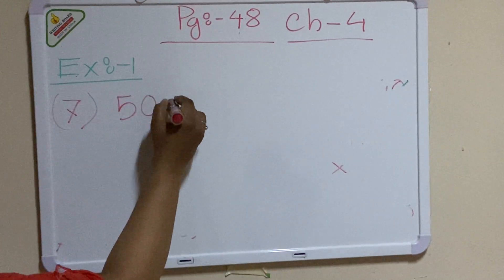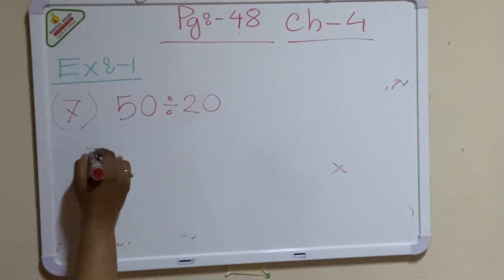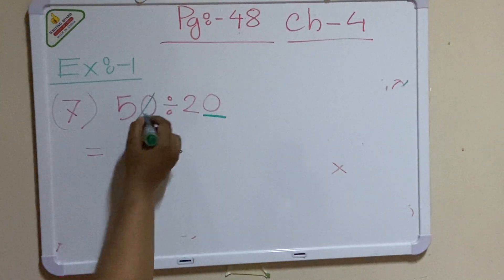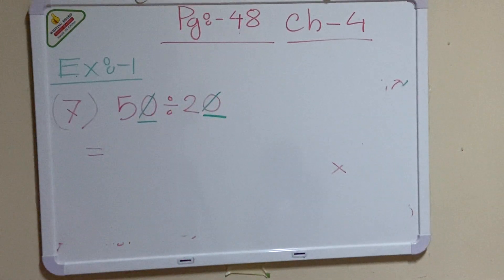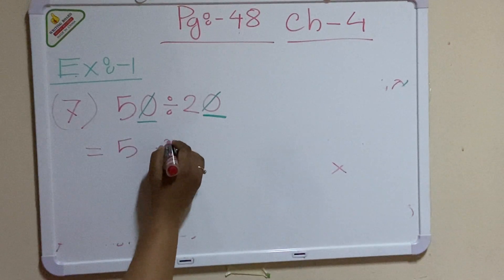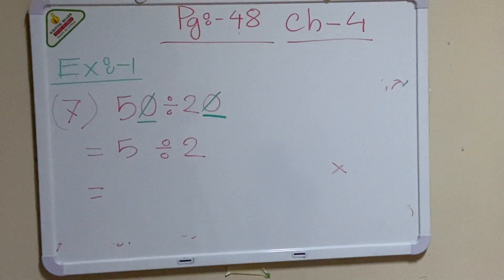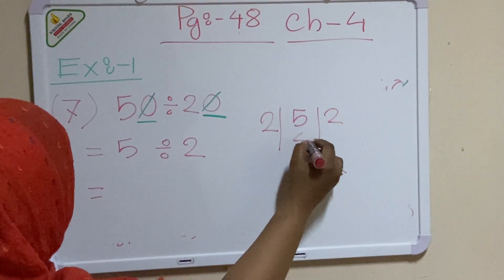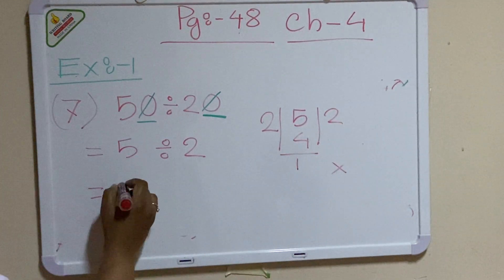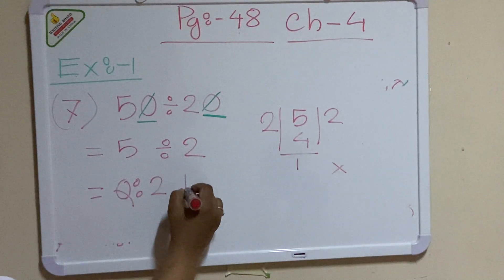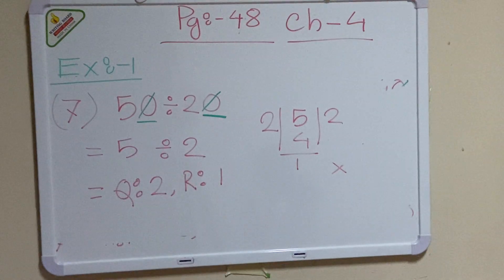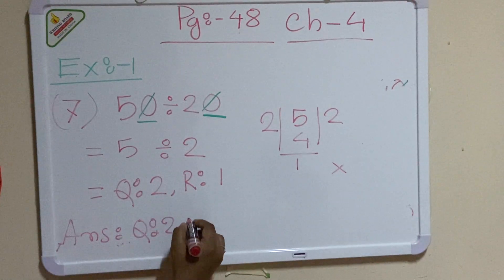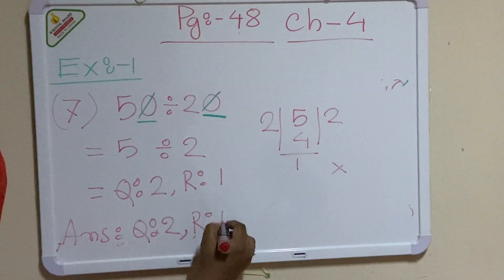Number 7 is 50 divided by 20. Here you can see the divisor has one zero and the dividend has one zero. Cut these zeros and write the remaining numbers: 5 divided by 2. In the table of 2 there is no 5, so 2 twos are 4. The answer is quotient 2, remainder 1.